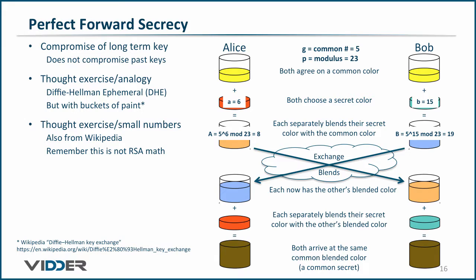Now, they do the first set of math. Alice creates capital A by raising 5 to the 6th power to get 15,625, and takes the modulus 23 of that number to get 8.